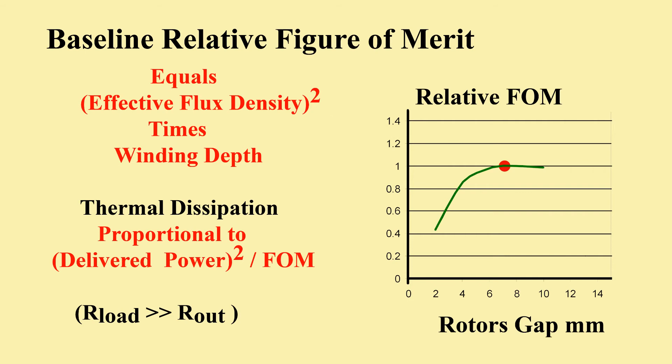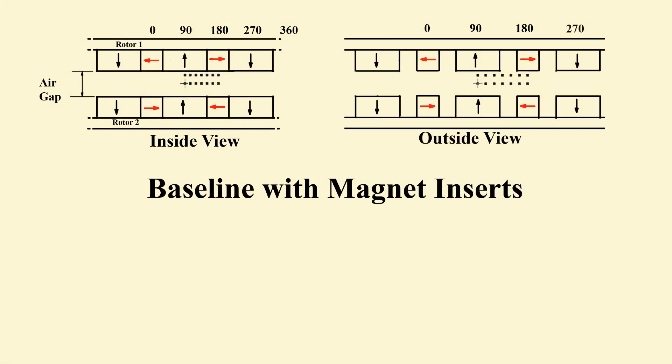We can now introduce the variants. The first has extra magnets inserted between those on the rotors. Their orientation should add to the flux through the coil legs.